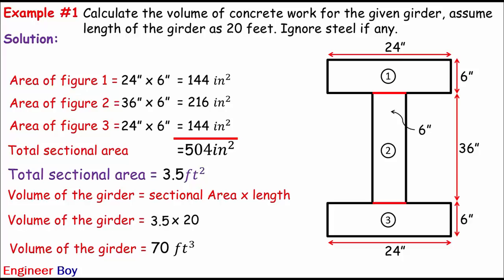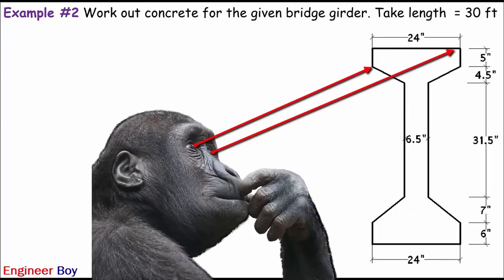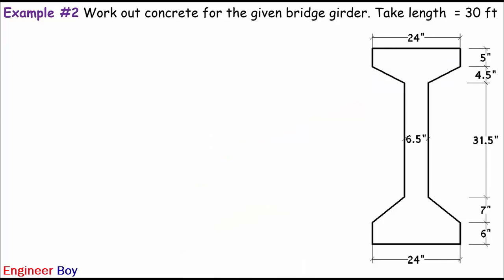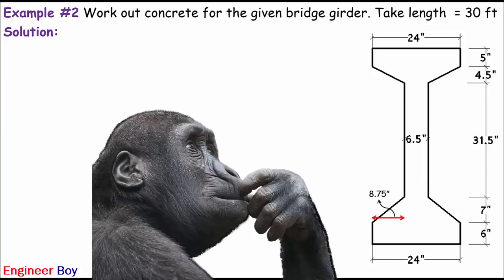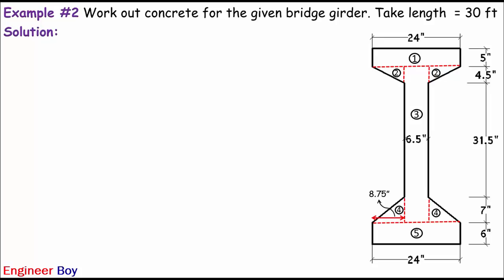Now I'm going ahead to the next example, where we get a slightly more complicated section. Let's take example two. We are asked to work out the concrete for the given bridge girder. The length of the girder is 30 feet. The data is clear, so I'll go directly into the solution. In the solution, remember those four steps. The first step is to convert this complicated shape into simple geometric shapes. Following the dotted red lines, we get only five geometric shapes.